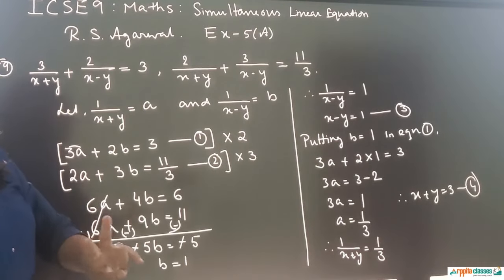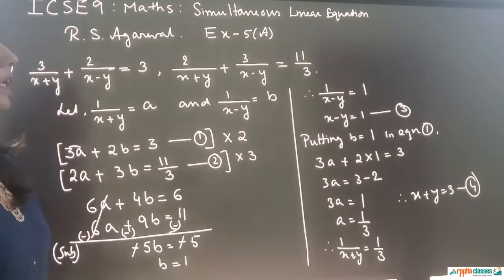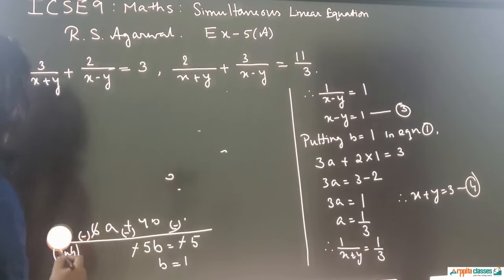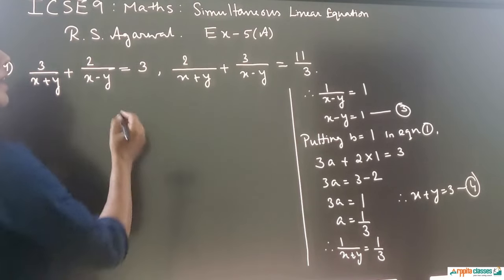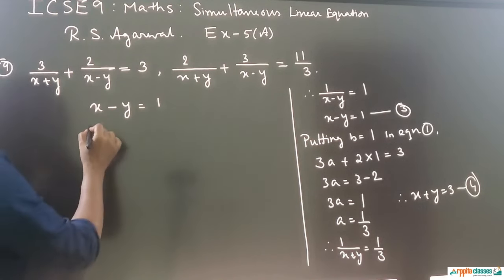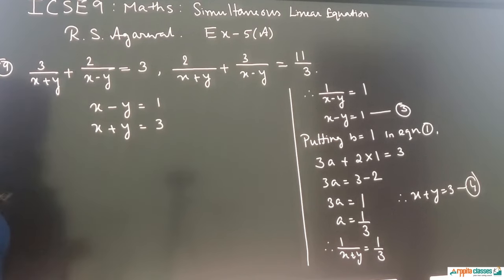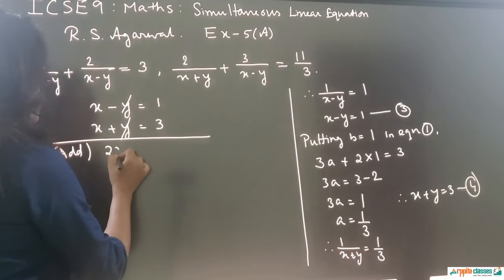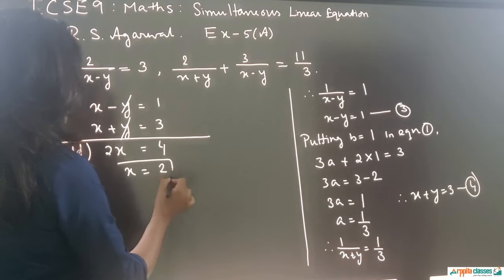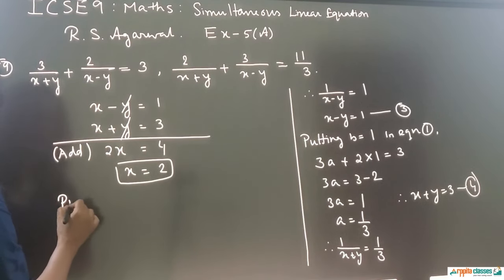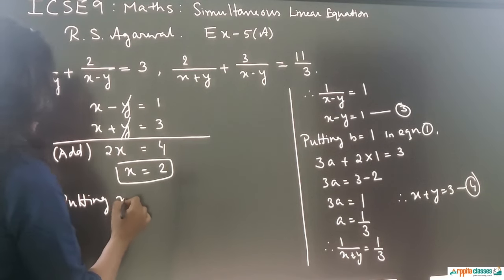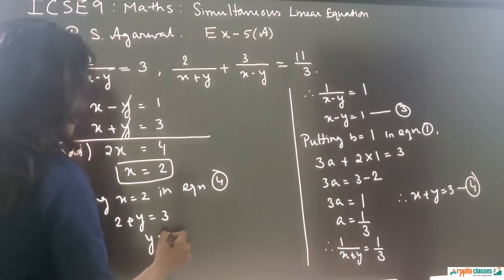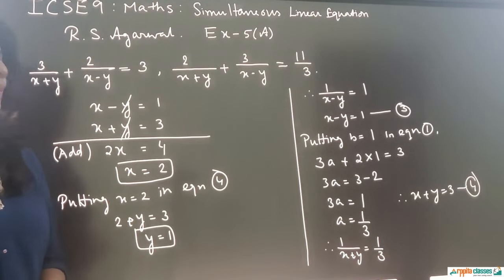We now have two simpler equations: x minus y equals 1 (equation 3) and x plus y equals 3 (equation 4). Adding them cancels Y, giving 2x equals 4, so x equals 2. Putting x equals 2 into equation 4: 2 plus y equals 3, so y equals 1. Therefore x equals 2 and y equals 1.